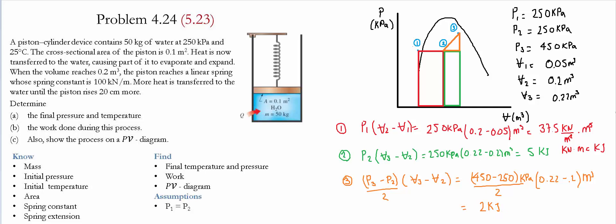Adding the three areas under the curve, the total boundary work is 37.5 plus 5 plus 2, which equals 44.5 kilojoules. The positive value confirms that work is done by the system, meaning it is expanding, as also visible from the PV diagram.